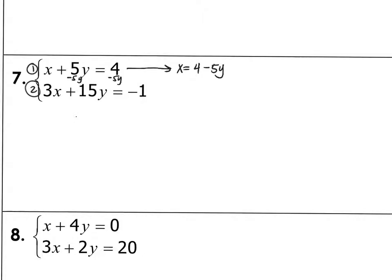Now, I can rewrite my second equation to revise my system. So now my system is, instead of x plus 5y equals 4, x equals 4 minus 5y and 3x plus 15y equals negative 1. So here's my equation 1 and my equation 2.